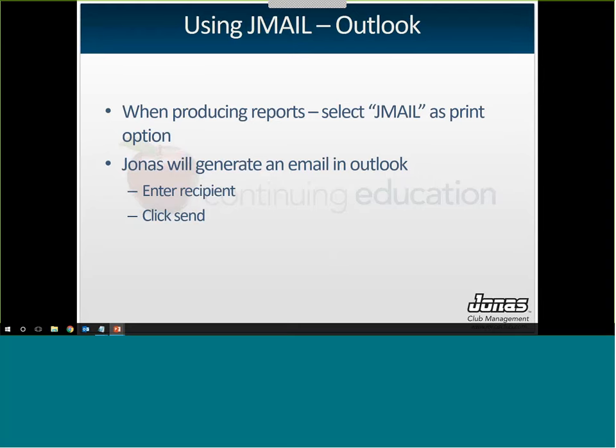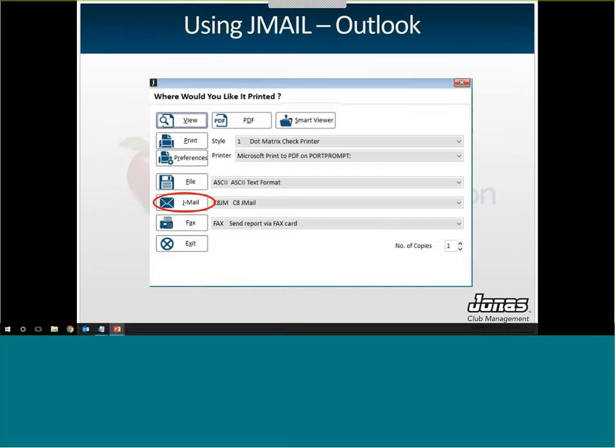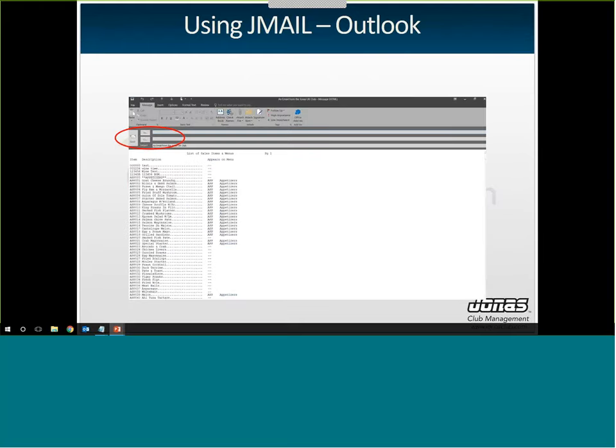Once parameters are set, tested, and confirmed, you can start using JML. If you've chosen Outlook as your mail client, when producing reports, instead of selecting Print, View, PDF, or Smart Viewer, you'll select JML. Jonas will generate an email in Outlook with the report attached and a subject line. All you have to do is enter the recipient. So if your controller is requesting reports, instead of printing, saving as a PDF, and attaching to an email, you can just hit Run in Jonas, then JML, and send right from there. In version 12.7, the JML button is near the bottom left of the print screen.